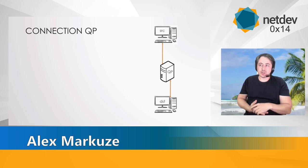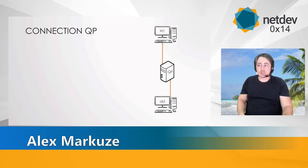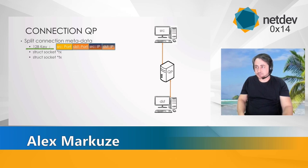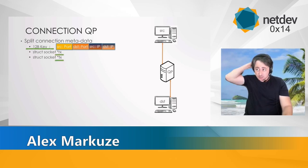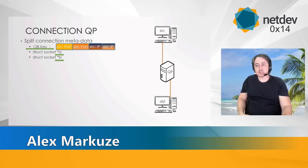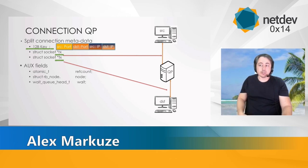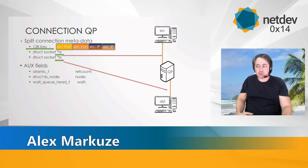The basic data structure used to manage a split connection is called a connection QP — a misleading misnomer, I admit. Each QP is identified by its TCP four-tuple — source, destination, port, IP — which provides a 12-byte key. We have two TCP sockets, one RX and one TX. The client-facing socket is called the RX and the server-facing is called the TX. Additionally we have a ref count to facilitate early teardown of the QP, an RB node, and a work queue used for initialization.